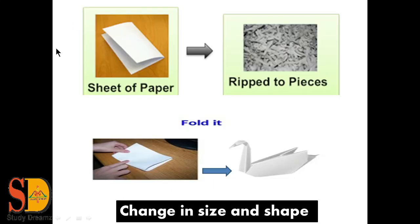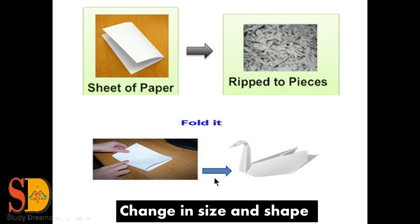Here are some more examples. We have a sheet of paper, and when we cut it, we get pieces of paper. In this process, the shape and size of the paper get completely changed, but the property of this paper remains the same. So this is a physical change. Next, with the same paper, when we fold it, the shape and size of the paper changes again, but the property remains the same. This shows a change in size and shape but no change in property — so this is known as a physical change.